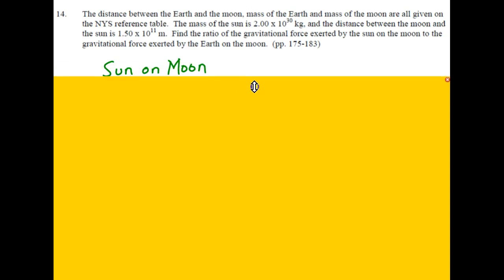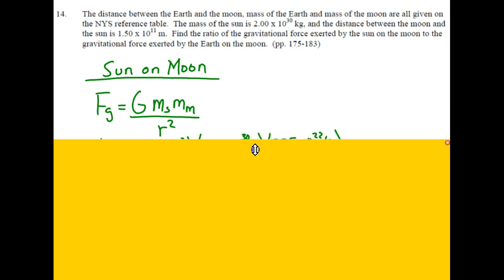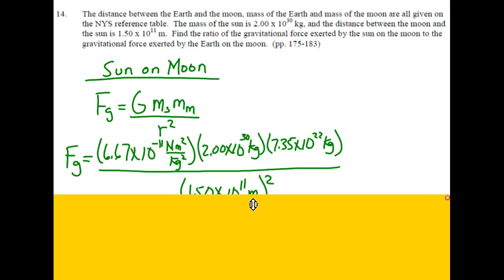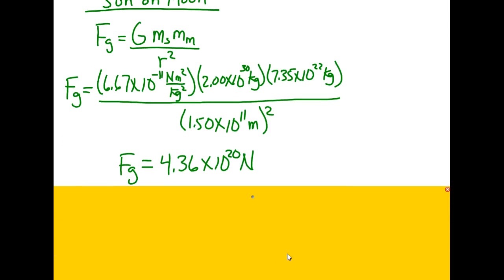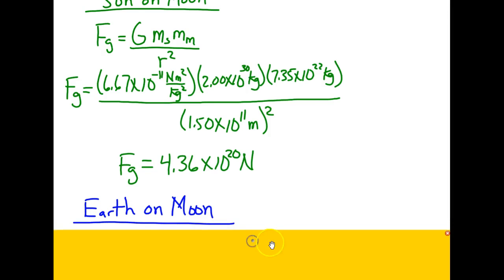To do this, we first have to calculate the gravitational force of attraction between the Sun and the Moon. This would be big G, mass of Sun, mass of Moon, divided by the distance between them squared. And we go ahead and substitute values, mass of the Sun 2 times 10 to the 30th, mass of the Moon off the reference table 7.35 times 10 to the 22nd kilograms, and the distance between them 1.50 times 10 to the 11th. Don't forget to square it. When we get that calculation done, we should find to three digits of value that's 4.36 times 10 to the 20th Newtons.